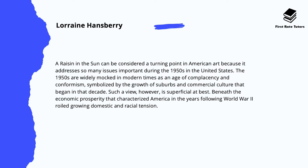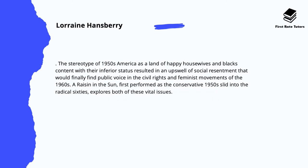A Raisin in the Sun can be considered an important turning point in American art because it addresses so many issues that were important and pertinent during the 1950s in the US. The 1950s were widely marked as an age of complacency and conformism, symbolized by the growth of suburbs and commercial culture. Such a view, however, is seen as superficial — beneath the economic prosperity that characterized America after the Second World War, there was growing domestic and racial tension. The stereotype of 1950s America was a land of happy housewives and African Americans content with their inferior status, which resulted in an upswell of social resentment that would finally find a voice in the civil rights and feminist movements of the 1960s.